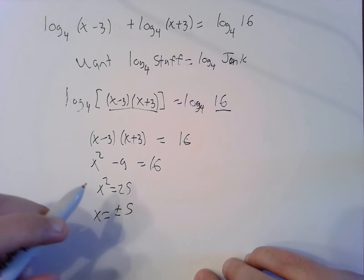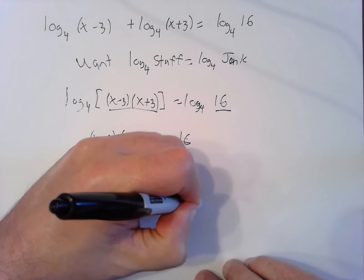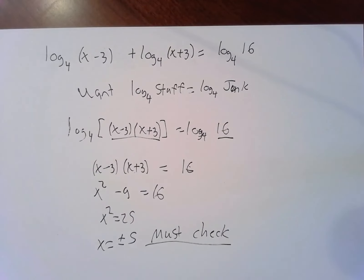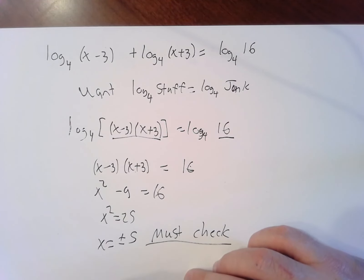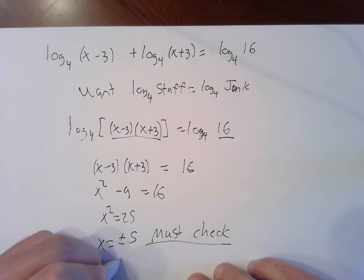Now I need to check and see if these answers are even allowed. Must check. By allowed I don't mean you should get out your calculator and check the answers work, but I'm saying we have to check if these answers are allowed, meaning no negatives, no zeros after I plug them. Let's check x equals five. Five minus three is two, I'm allowed to do log of two. Five plus three is eight, I'm allowed to do log of eight. X equals five is good.